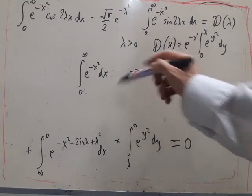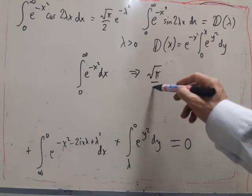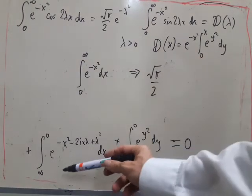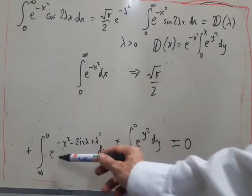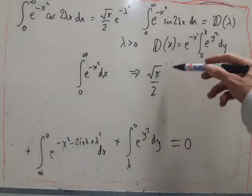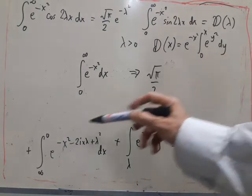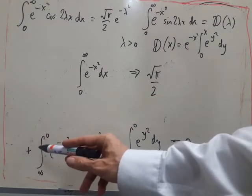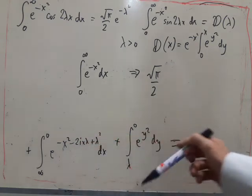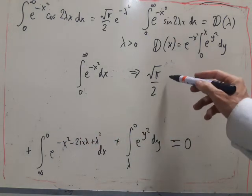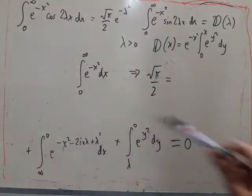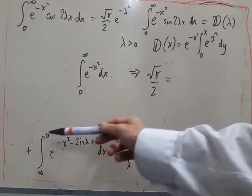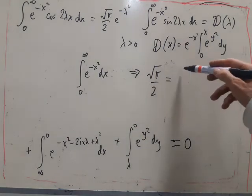So we've got this plus this plus this equals zero. So rewriting, we've got this, as we said, is root pi over 2. So this, we can take out the factor of e to the lambda squared. So we've got, and we've also got, we can get, well, okay, let's shift things onto the other side. So we've got,